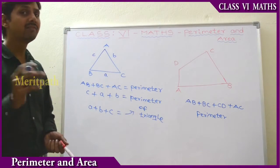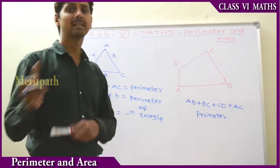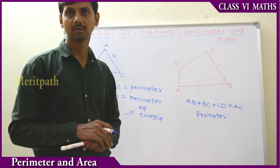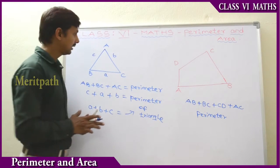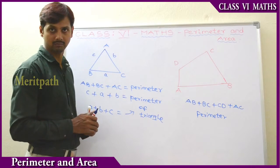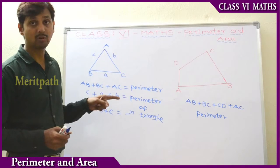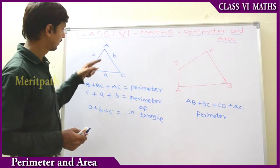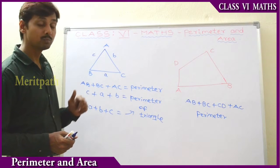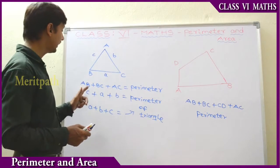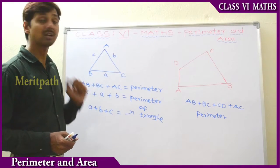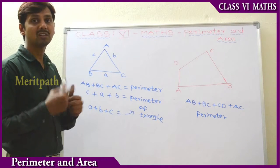Similarly, we can take any figure and add all the sides — that is its perimeter. So let's find out the perimeter of a rectangle. For a triangle, the perimeter is A plus B plus C. For a quadrilateral, perimeter is the sum of all the sides. Now we will go to the next concept: the perimeter of a rectangle.